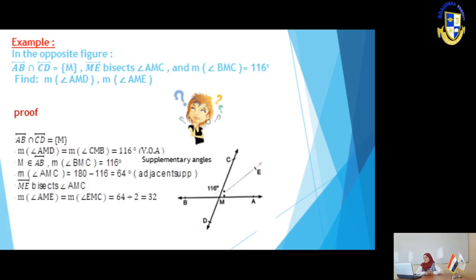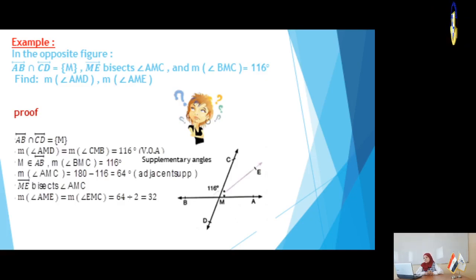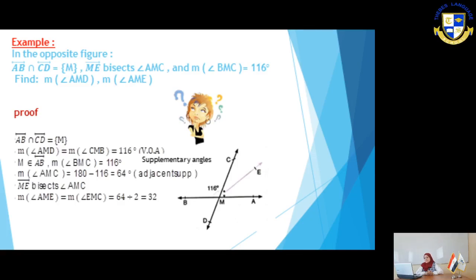Then, if we have a straight line, it makes a straight angle with a measure of 180 degrees. So, where point M belongs to AB straight line, angle AMB is a straight angle measuring 180 degrees. Since measure of angle BMC equals 116, we can get measure of angle AMC by subtracting: 180 minus 116 equals 64 degrees. The reason is supplementary angles or straight angle.